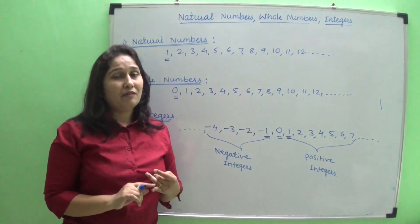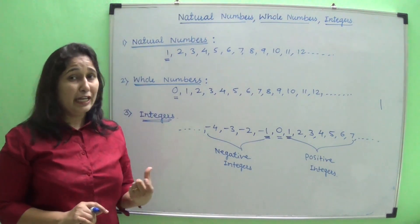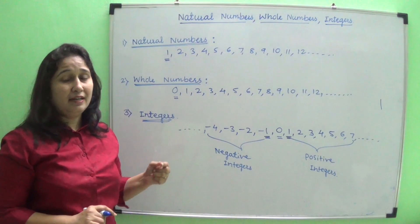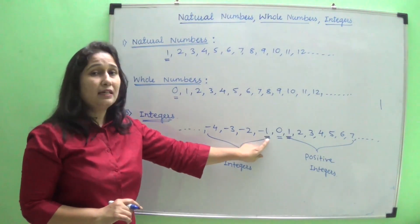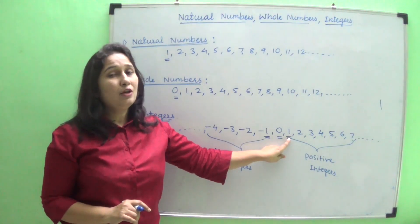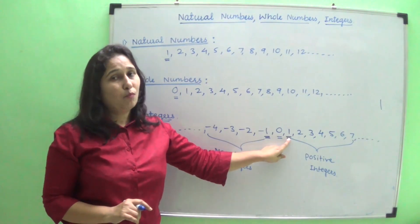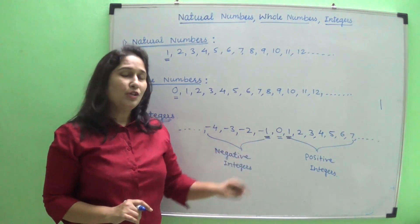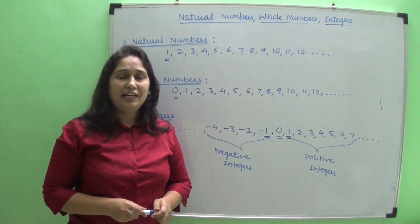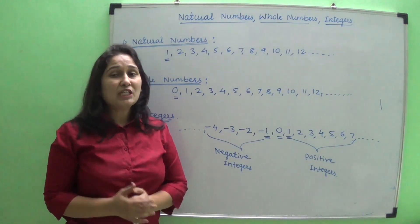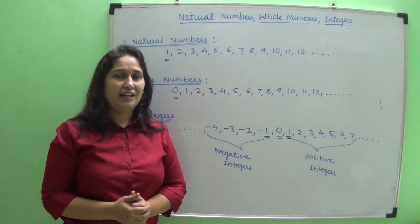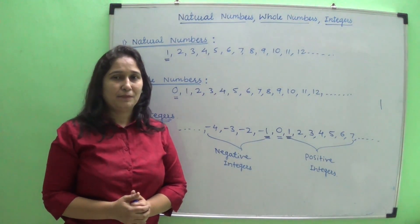To summarize: minus one is the highest negative integer and plus one is the lowest positive integer. This was all about natural numbers, whole numbers, and integers. In my next video we will learn about rational numbers and irrational numbers. Thank you.